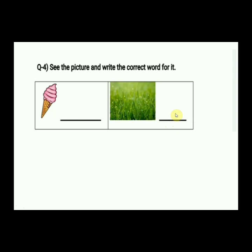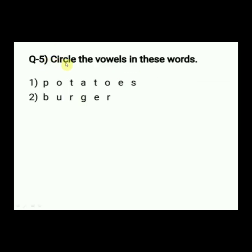Now see question number 5: Circle the vowels in these words. First word is P-O-T-A-T-O-E-S — potatoes. From this word, you have to circle all the vowels. Now see the second word: B-U-R-G-E-R — burger. Circle the vowels in burger.